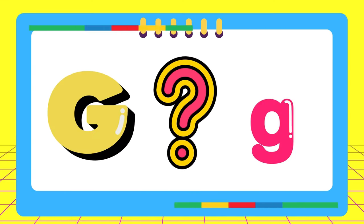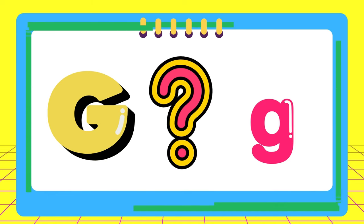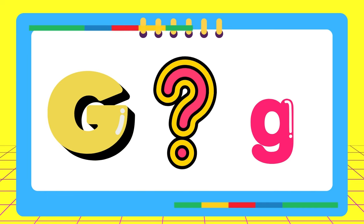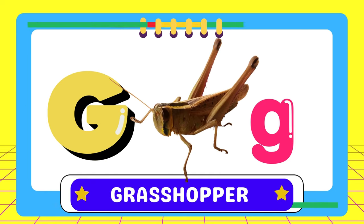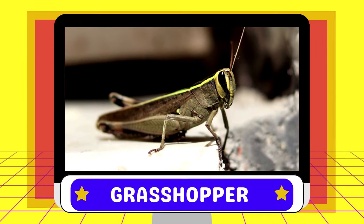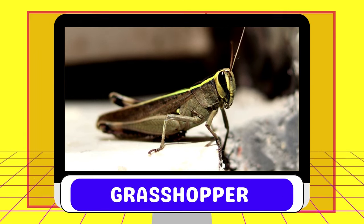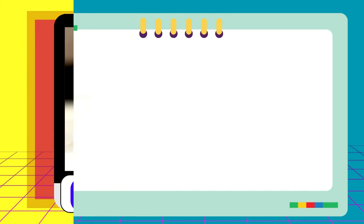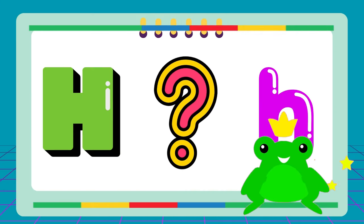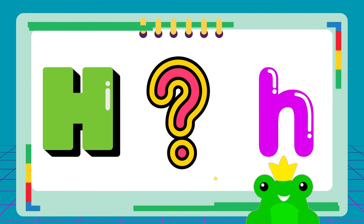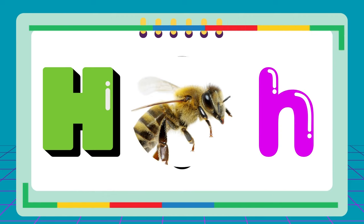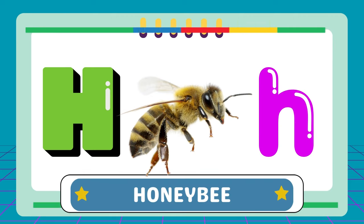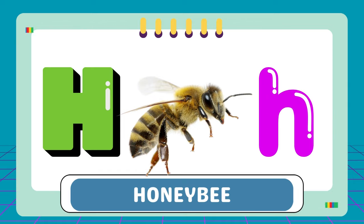G — G for grasshopper. H — H for honeybee.